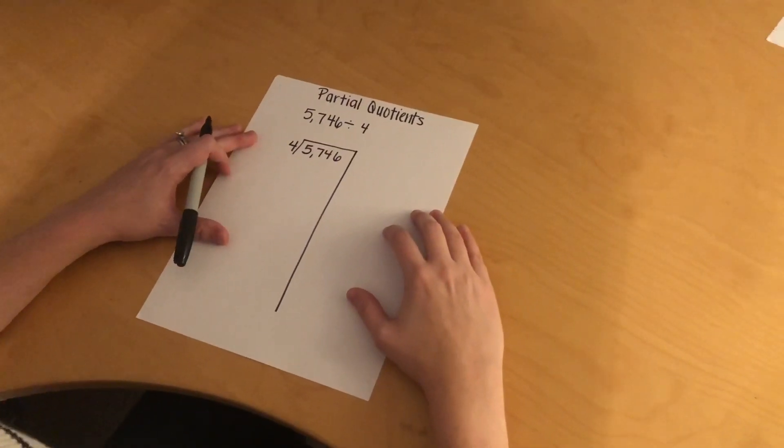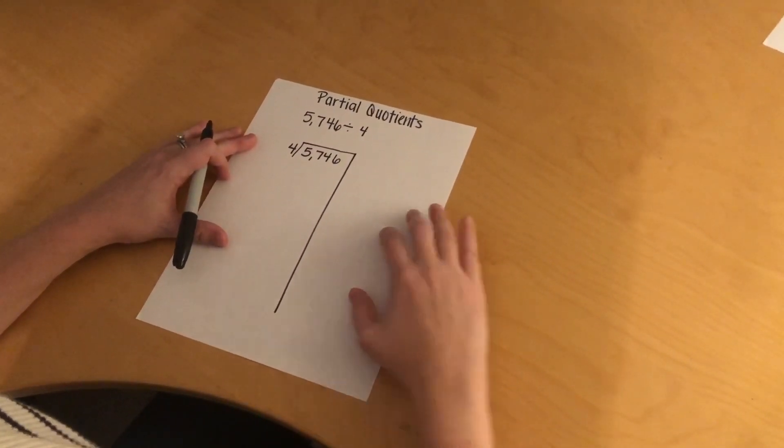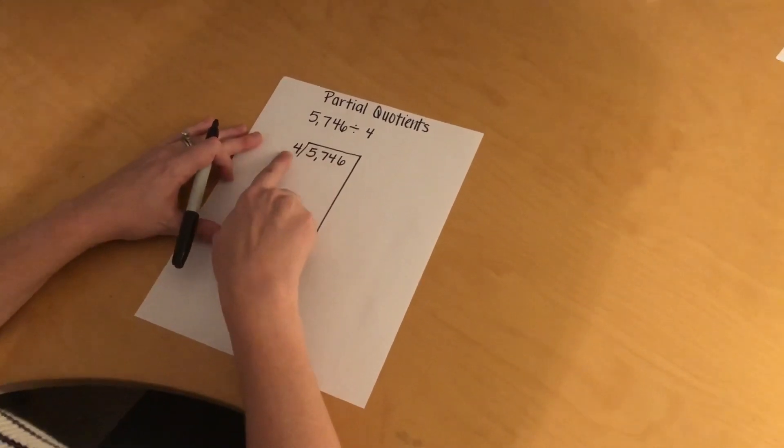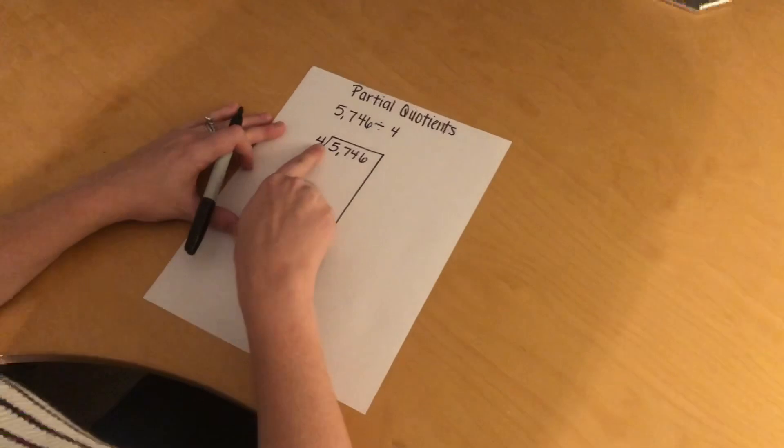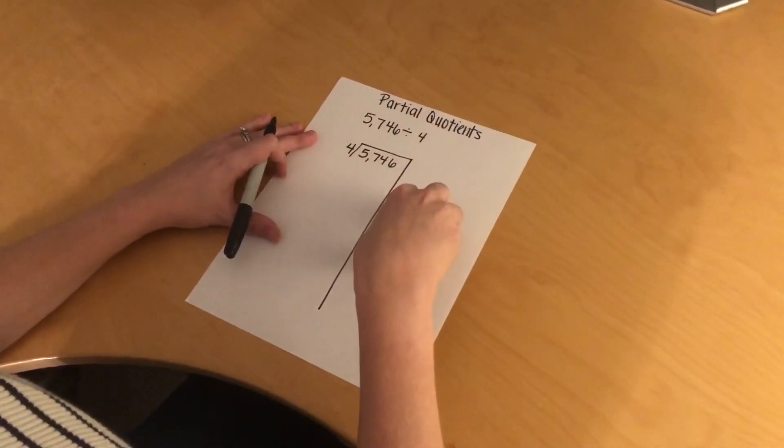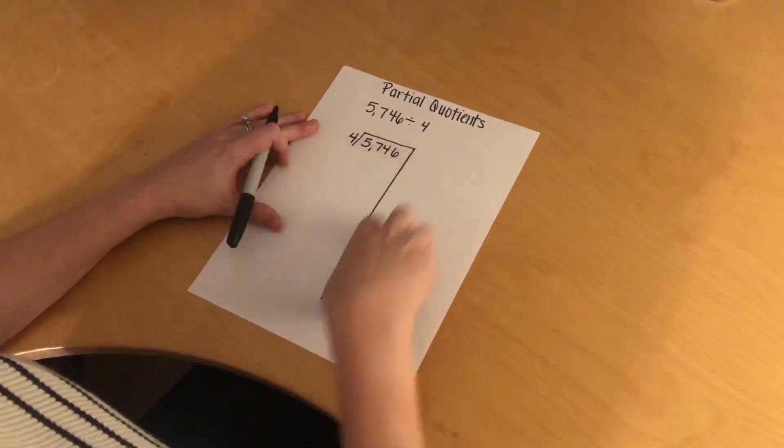Hey guys, I'm going to show you how to use partial quotients in order to divide. Here I have my dividend of 5,746, and then I have my divisor of 4. I kind of put it in this hangman style thing because I'm going to start taking out parts of the quotients, and I'm going to line them up over here.